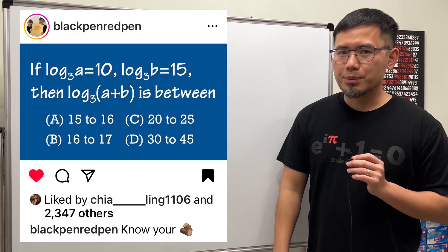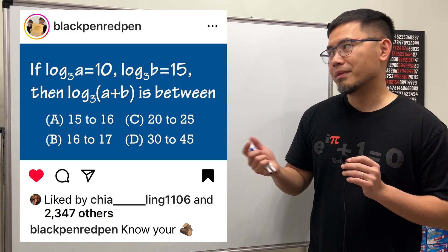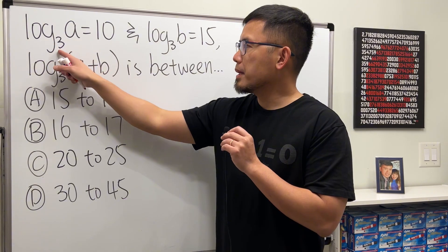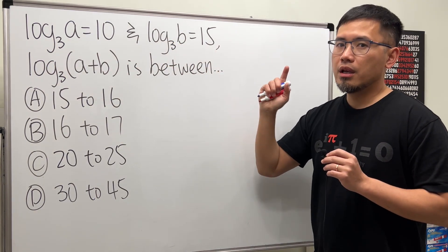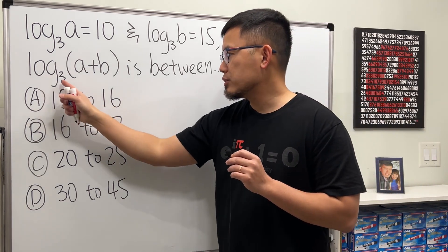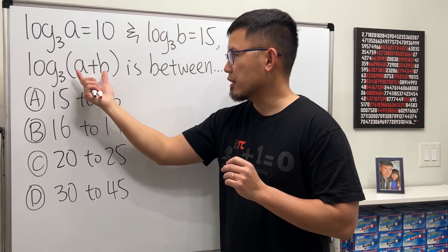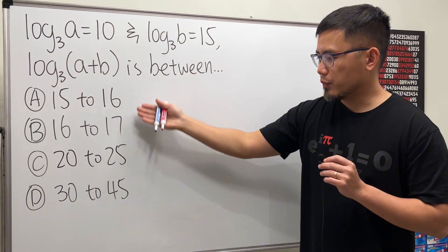Here's the solution to the logarithm question I posted on my Instagram. Let's have a look. We know log base 3 of a equals 10, and log base 3 of b equals 15. We're going to find out log base 3 of (a+b), this is inside of the log, is between which two numbers.